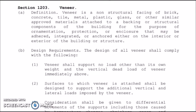Proceeding to Section 1203, which is all about veneer. By definition, veneer is a non-structural facing of brick, concrete, tile, metal, plastic, glass, or other similar approved materials attached to a backing or structural component of the building for the purpose of ornamentation, protection, or enclosure, that may be adhered, integrated, or anchored either on the interior or exterior of the building or structure.